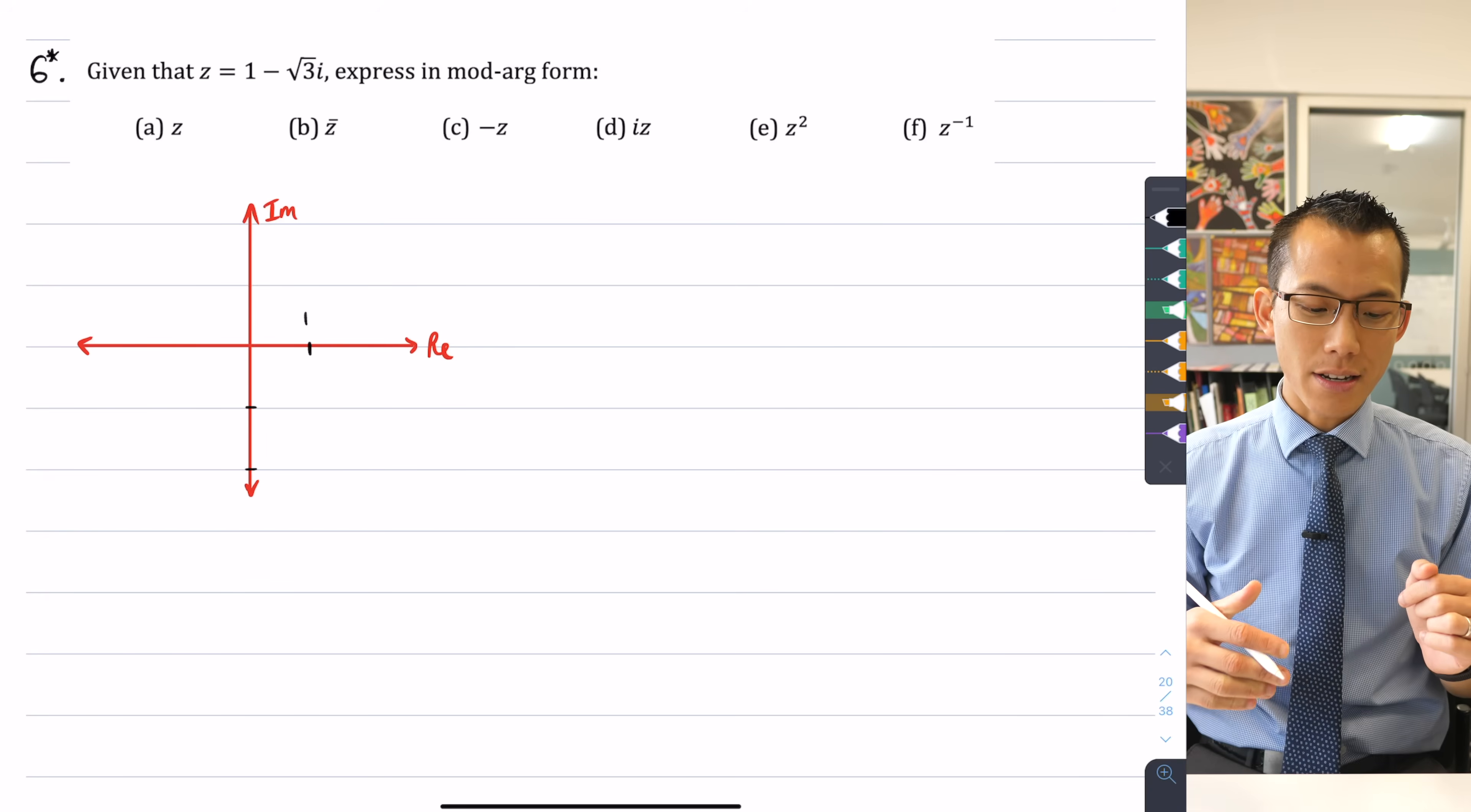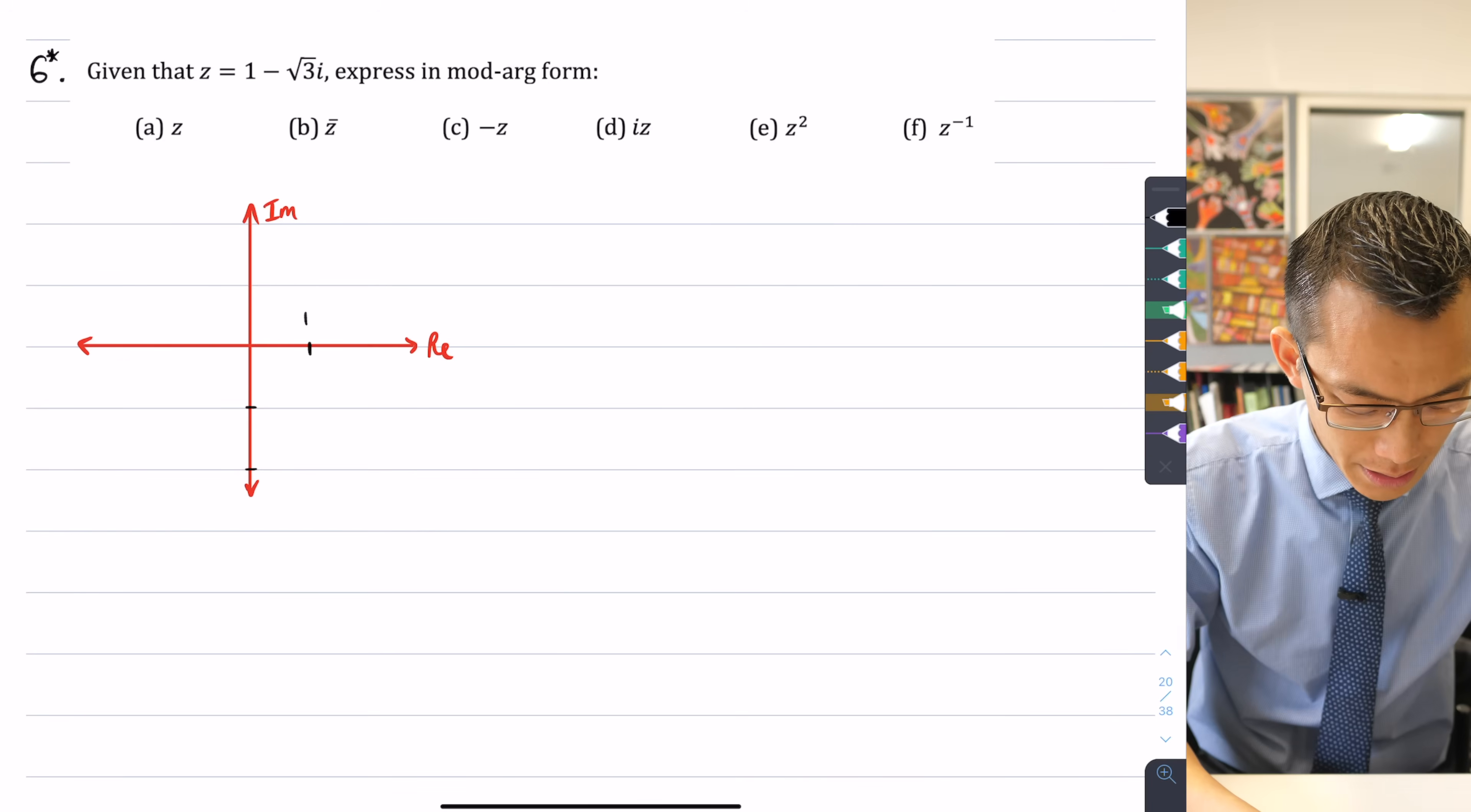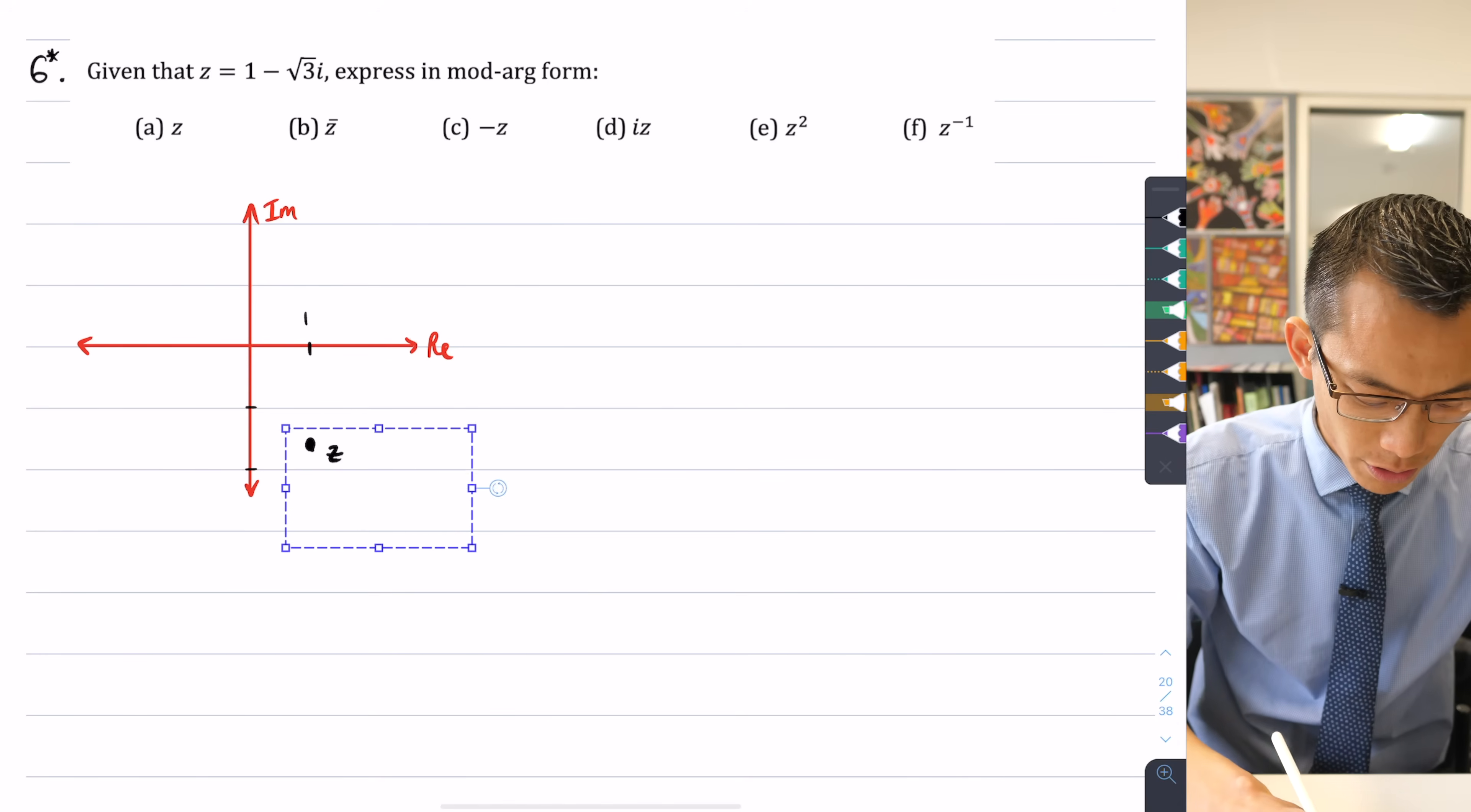And negative root three is about negative 1.7. So I'm going to place z around here. Actually, let's change that into a more helpful colour.